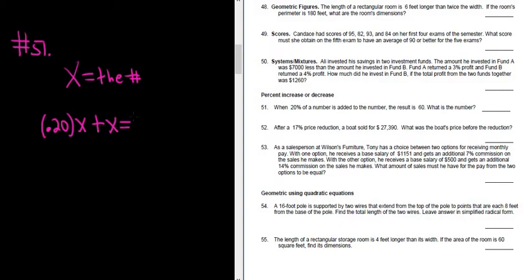The result is 60. So 20% of the number, that's this, is added to the number, the result is 60. There's a 1 here, so you can add these up. You would get 1.20x, and that equals 60.